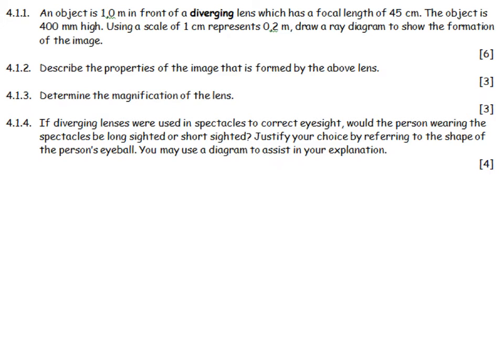An object is 1 meter in front of a diverging lens, and it's important it's a diverging lens, which has a focal length of 45 centimeters. The object is 400 millimeters high, using a scale of 1 centimeter represents 0.2 meters. Draw a ray diagram to show the following image.